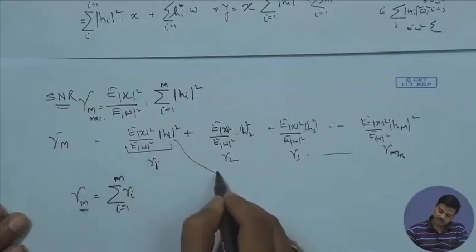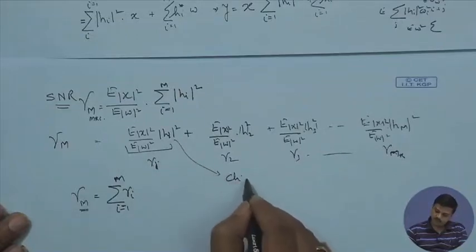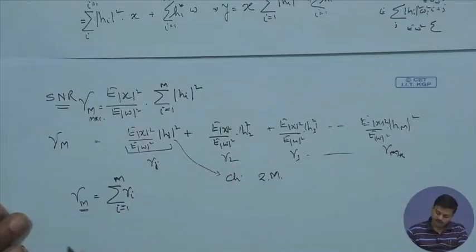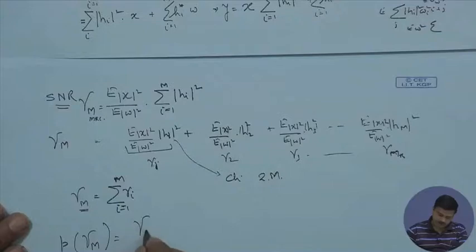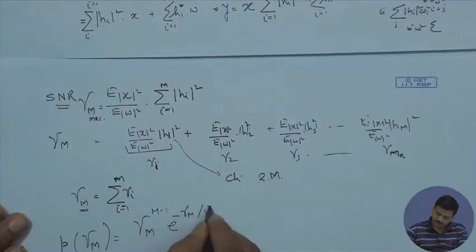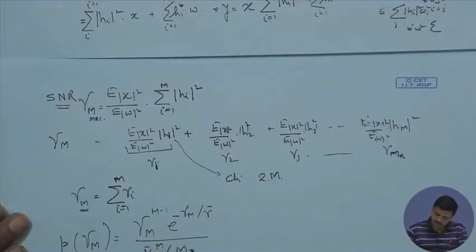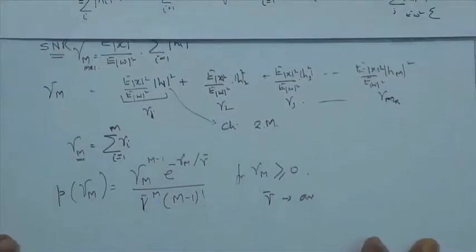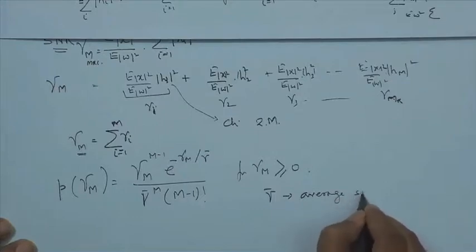For Rayleigh distribution, |H_i|² is chi-square distributed with 2 degrees of freedom. If there are M such terms, it is chi-square distributed with 2M degrees of freedom. The PDF of gamma_MRC is p(gamma_M) = gamma_M^(M−1) × e^(−gamma_M / gamma_bar) / (gamma_bar^M × (M−1)!) for gamma_M ≥ 0, where gamma_bar is the average SNR of each branch.